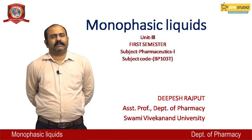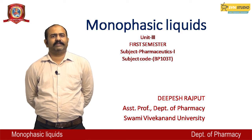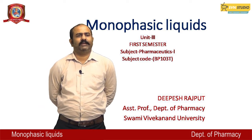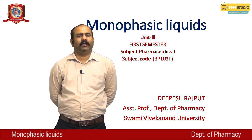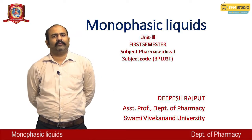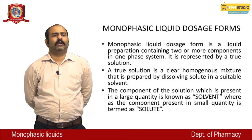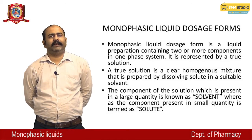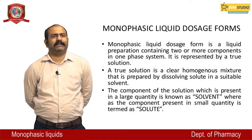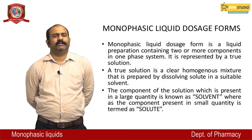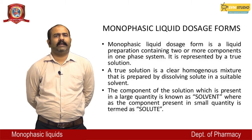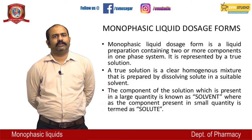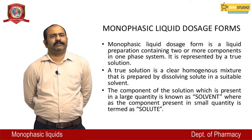Today we discuss an important topic: monophasic liquids. Unit third, first semester subject Pharmaceutics, subject code BP103T. Monophasic liquid dosage forms — a liquid preparation containing two or more components in one phase system, represented by a true solution. A true solution is a clear homogeneous mixture prepared by dissolving a solute in a suitable solvent.